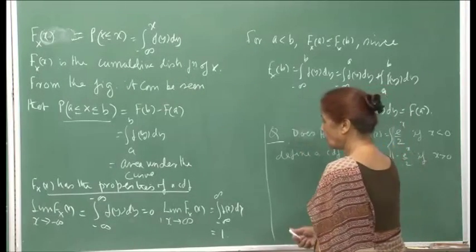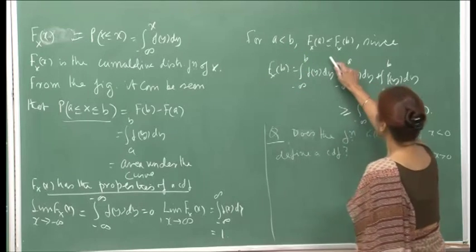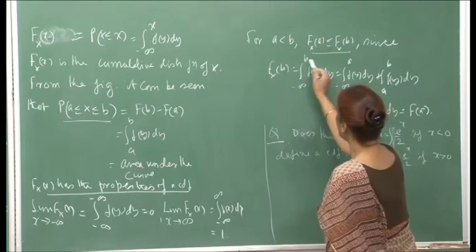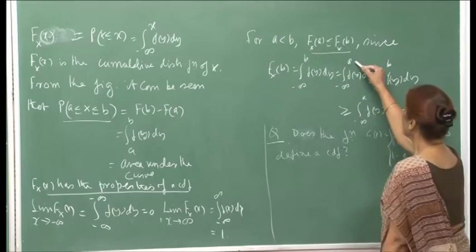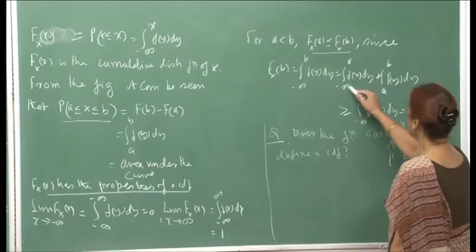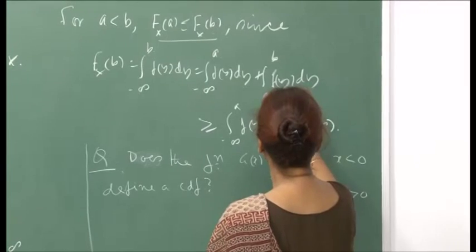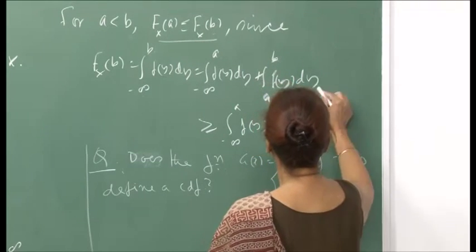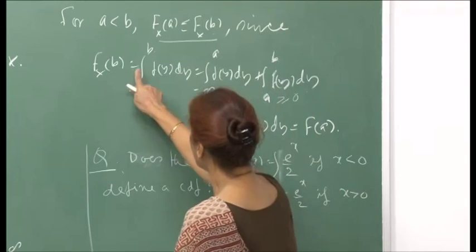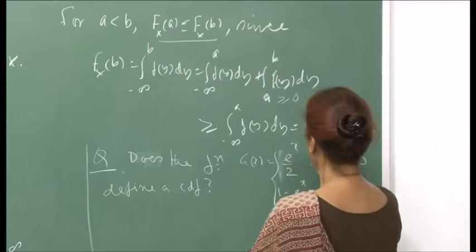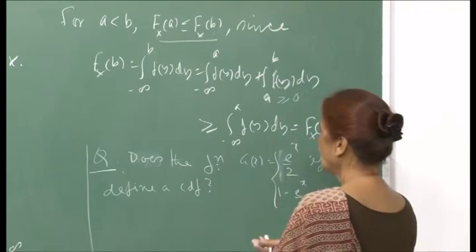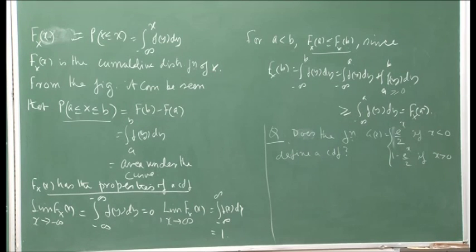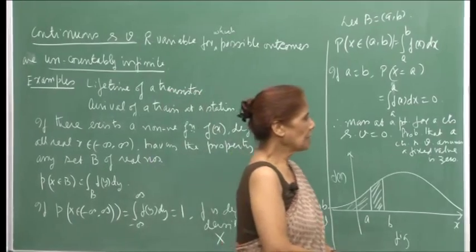To show that F is monotonic: for a less than b, since F(b) can be written as the integral from minus infinity to b of f(y) dy, and b is bigger than a, I can break this up into the integral from minus infinity to a plus the integral from a to b. Since f is non-negative, this second term is non-negative, therefore F(b) is bigger than F(a). So the function F is monotonic and satisfies all conditions for a cumulative distribution function.